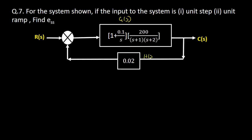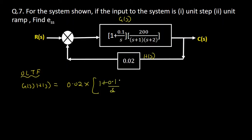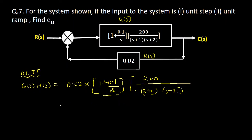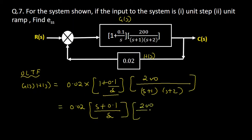To find the steady state error, we need the open loop transfer function G(s)H(s), which equals 0.02 into (1 plus 0.1 divided by s) into (200 divided by (s plus 1)(s plus 2)). Taking the LCM, we get G(s)H(s) = 0.02 into (s plus 0.1) divided by s, into 200 divided by (s plus 1)(s plus 2). Let this be equation number one.